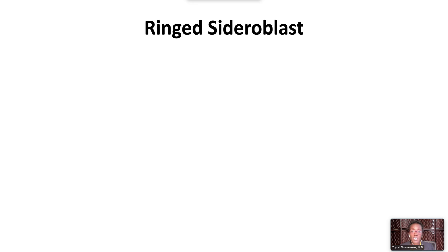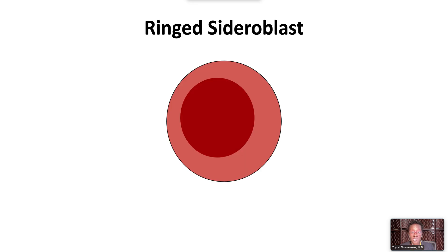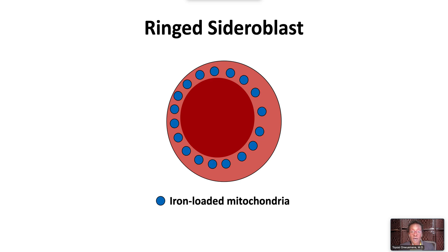A ring sideroblast is an erythroblast or red blood cell precursor that contains iron-loaded mitochondria. The iron-loaded mitochondria can be visualized with Prussian blue staining as a perinuclear ring of blue granules. These granules represent pathologic iron deposits in mitochondria due to aberrations in iron processing in the developing red blood cell.